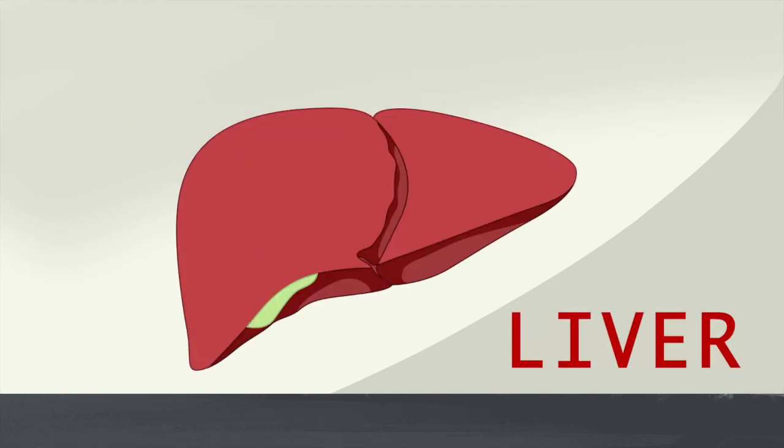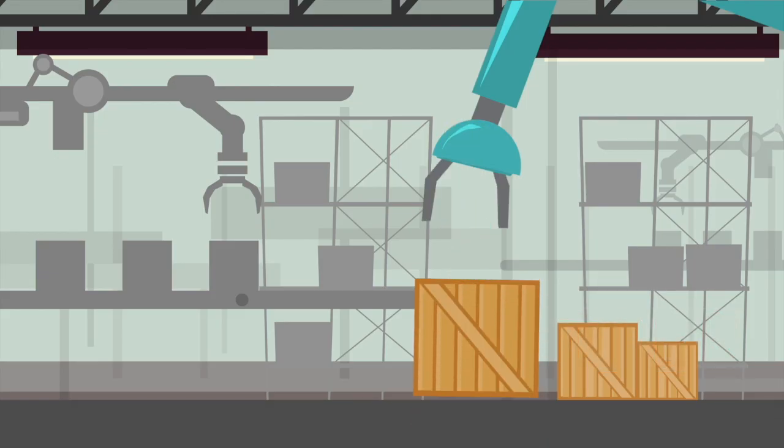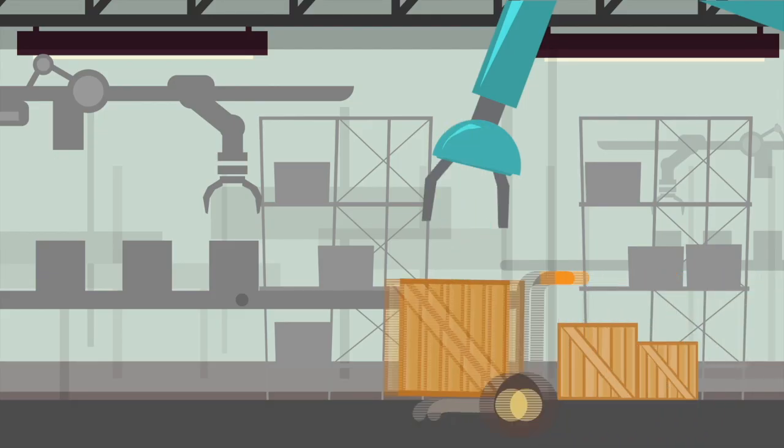The liver. We can't live without this amazing organ. It is always busy managing supply and storage of energy for our body, and it gets rid of many harmful wastes and toxins in our blood by constantly cleaning it.